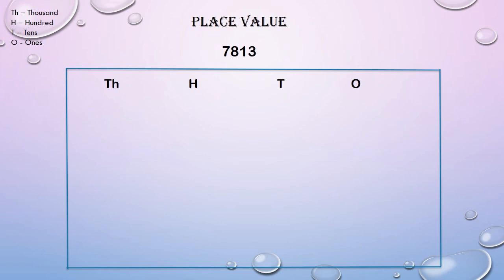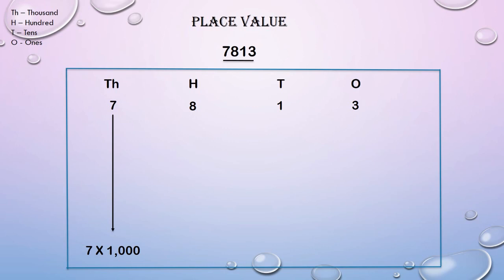Let us take 7,813. We write the number 7,813 in the place value chart. Now let us have a look at the place value of each digit. 7 is in the 1000's column, which means there are 7 thousands, so its place value is 7 multiplied by 1000, that is 7,000.